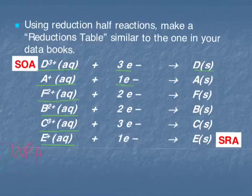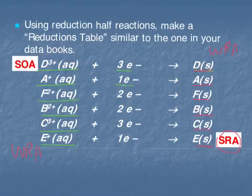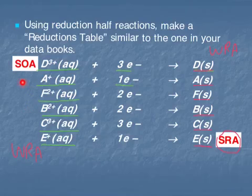We can also go back and double-check: do we have our strongest reducing agent listed on the bottom right and our weakest reducing agent on the top right? E metal was the most reactive, followed by C metal, B metal, F metal, A metal, and our least reactive metal was D metal. Indeed, we do have our table listed correctly both in terms of oxidizing agent strength on the left-hand side and reducing agent strength going from bottom to top on the right-hand side.